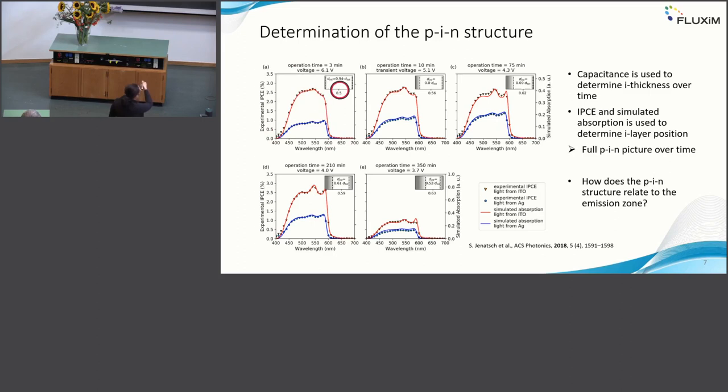This is as a function over time. You have first very thin doped layers, then the p-doped layer grows into the center, and finally also the n-doped layer starts to go a bit into the center. Eventually you have some degradation already, and the photo-current gets much lower, but still you have quite a wide intrinsic layer in such sandwich type devices.